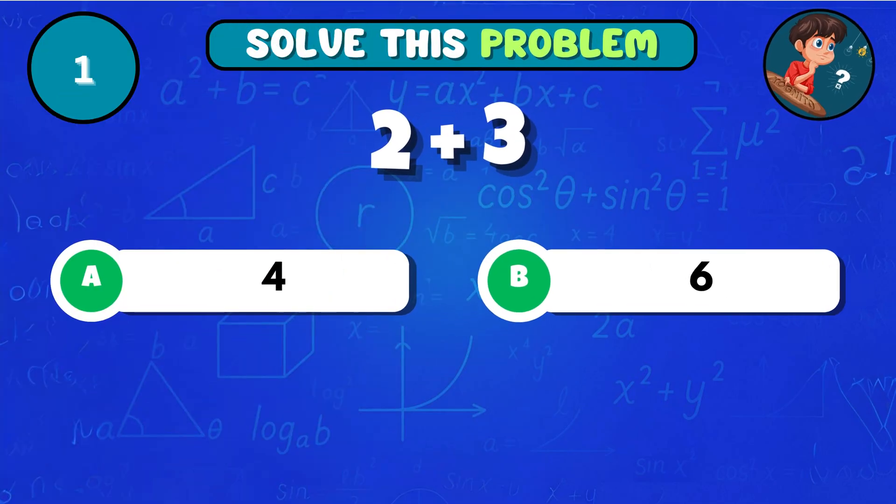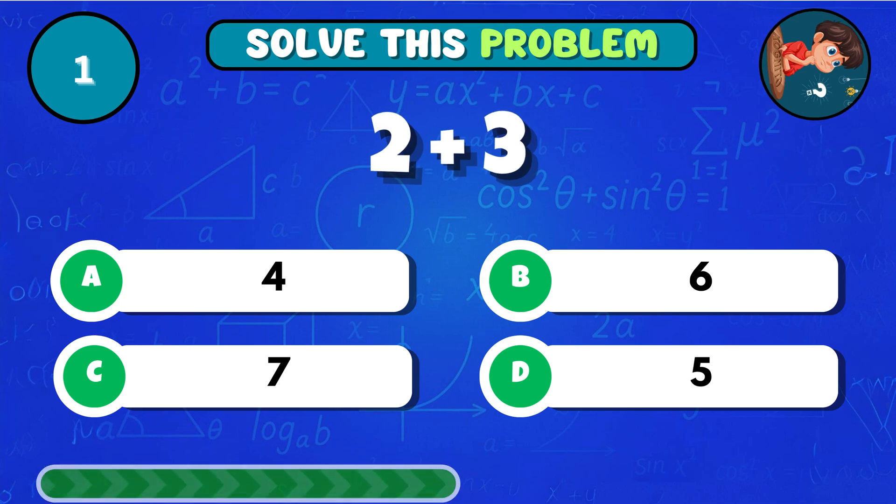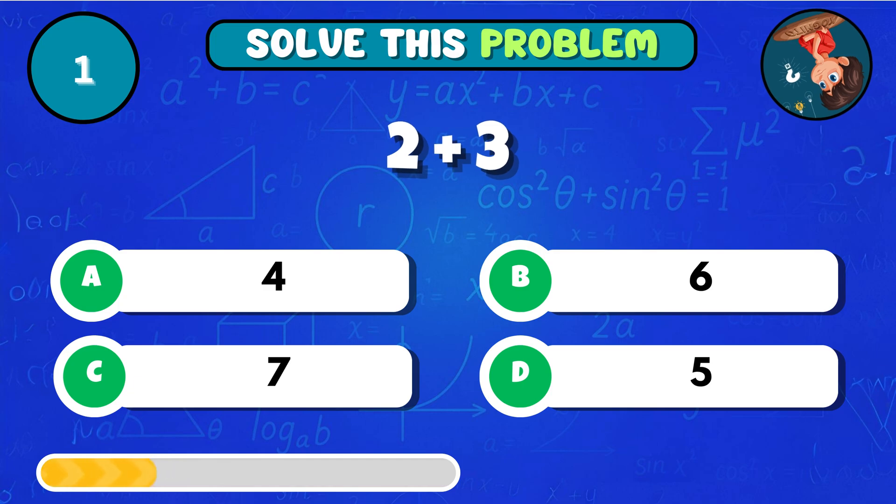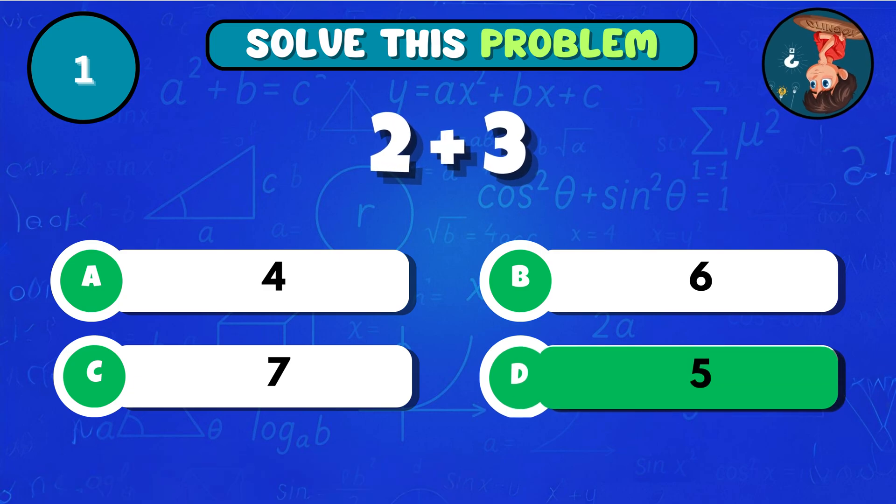Alright, let's get started! Can you add 2 and 3 together? That makes D 5!